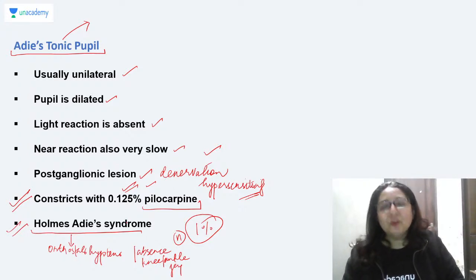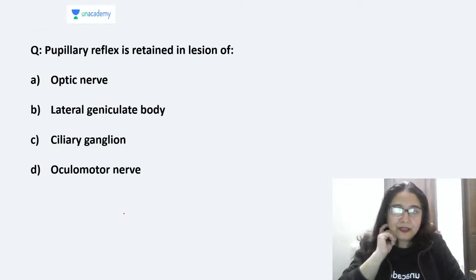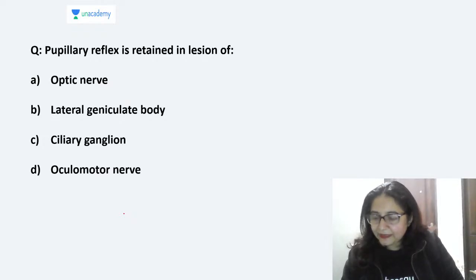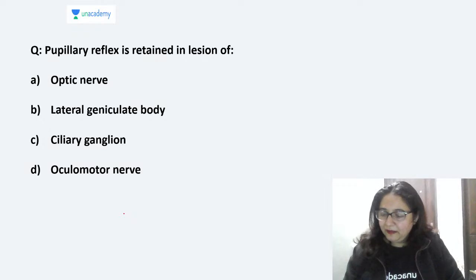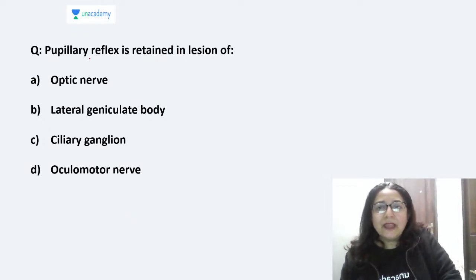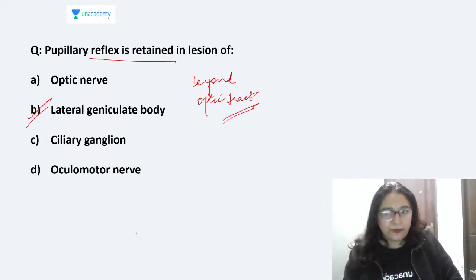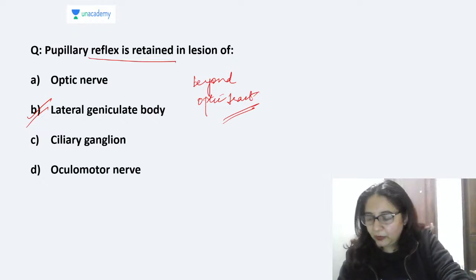MCQ: Pupillary reflex is retained in the lesion of which structure — optic nerve, lateral geniculate body, ciliary ganglion, or oculomotor nerve? The answer is lateral geniculate body, because beyond the optic tract, the pupillary fibers diverge from the visual pathway. So lesions of the lateral geniculate body, optic radiations, or occipital cortex will leave the pupillary reflex normal.